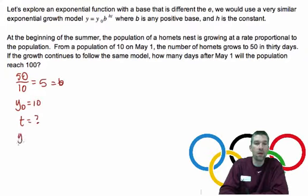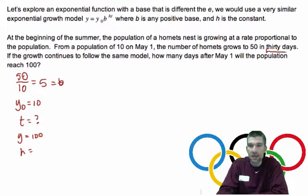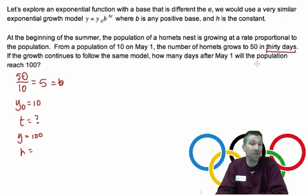All right. T. We don't know. We know that we end up with a population of 100. And here's the h part. Did you see h in there? It takes 30 days to go from 10 to 50.